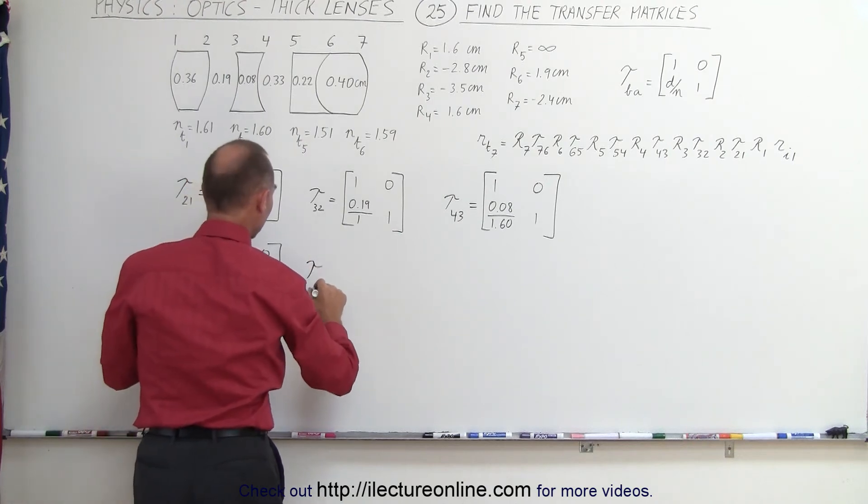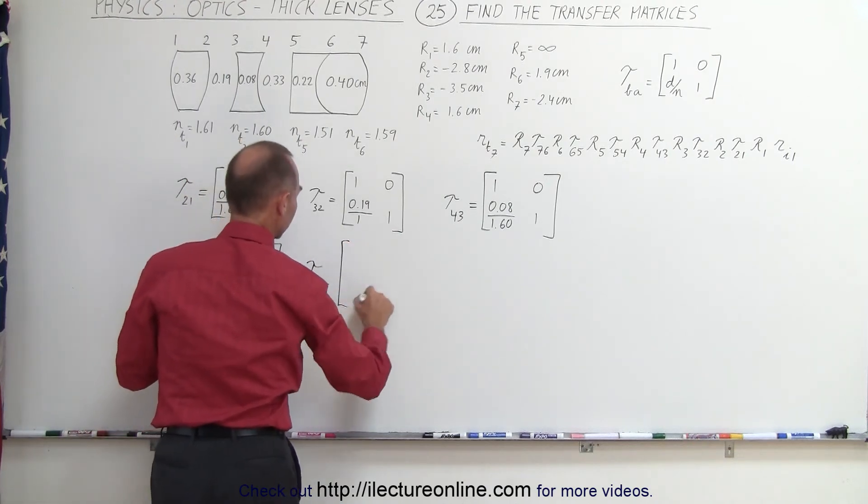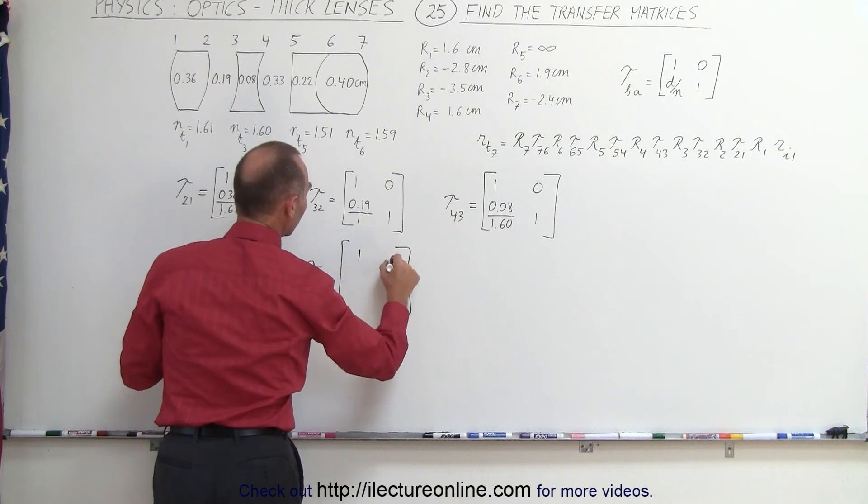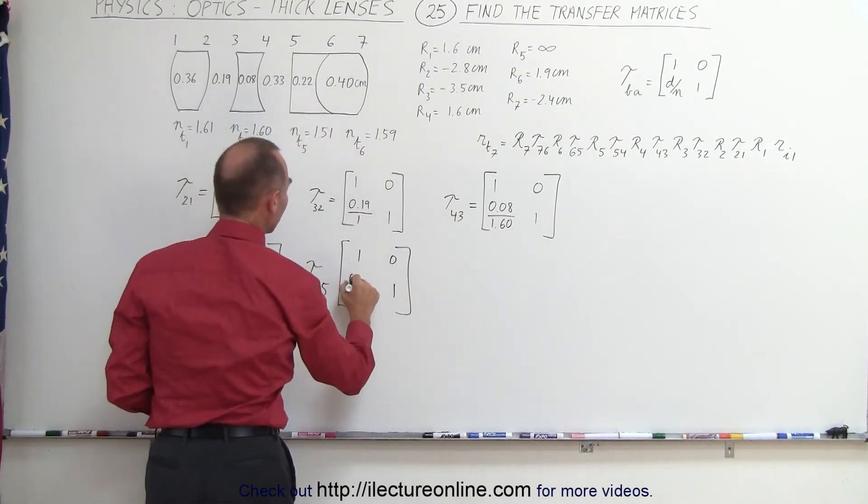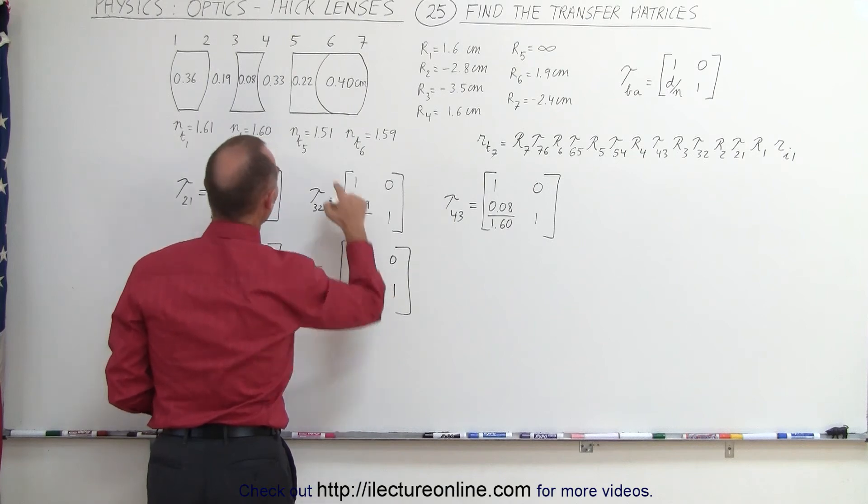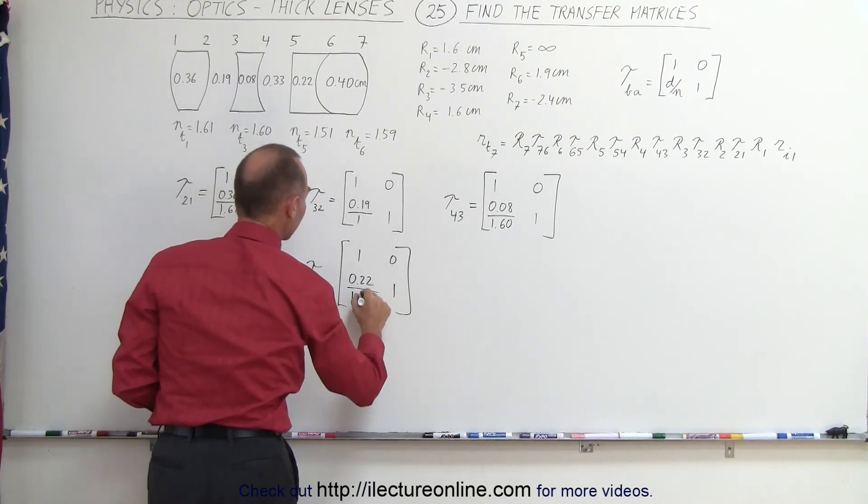Transfer matrix going from 6 to 5. Again, we have 1, 0, 1. And then over here, we're here, the thickness here would be 0.22, divided by the index of refraction, 1.51.